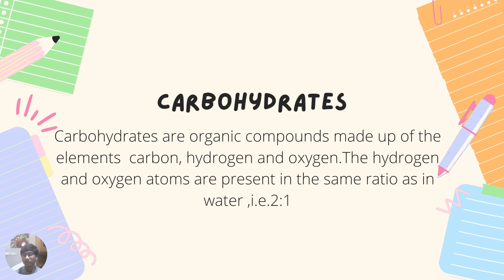Think about it like this: in water the chemical formula is H₂O, meaning two atoms of hydrogen and one atom of oxygen. In a carbohydrate — for example, the monosaccharide C₆H₁₂O₆ — we see 12 atoms of hydrogen and 6 atoms of oxygen. When we do the ratio, we get 12:6, which equals 2:1, the same ratio as in water.